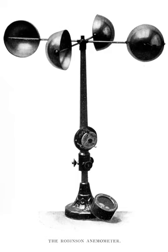Ultrasonic anemometers, first developed in the 1950s, use ultrasonic sound waves to measure wind velocity. They measure wind speed based on the time of flight of sonic pulses between pairs of transducers. Measurements from pairs of transducers can be combined to yield a measurement of velocity in one, two, or three-dimensional flow. The spatial resolution is given by the path length between transducers, which is typically 10 to 20 centimeters.